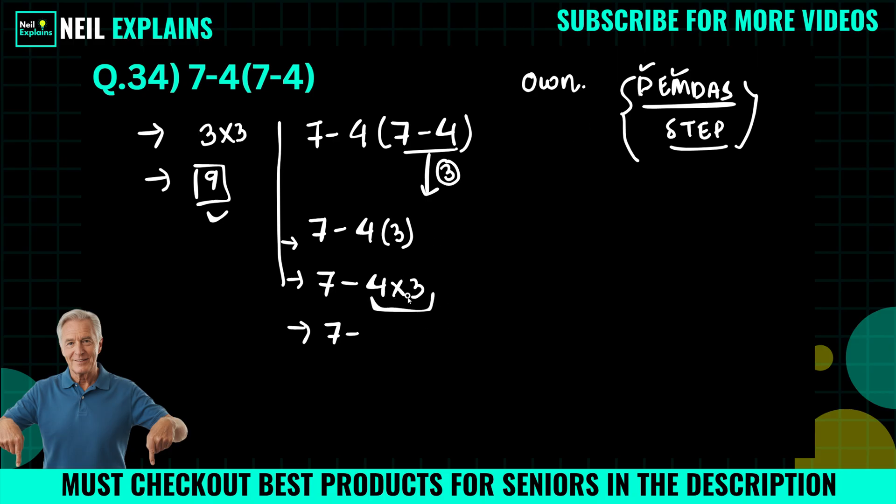4 times 3, that is equal to 12. Now for our answer, we have to subtract 7 minus 12, and we get minus 5. So the right answer is minus 5.